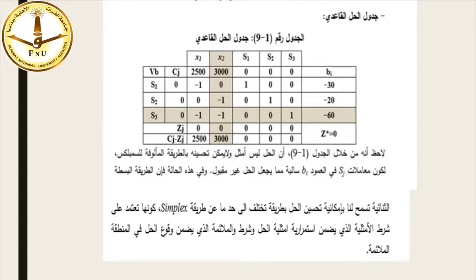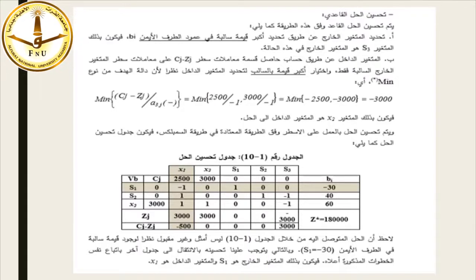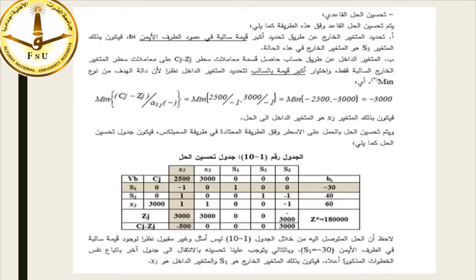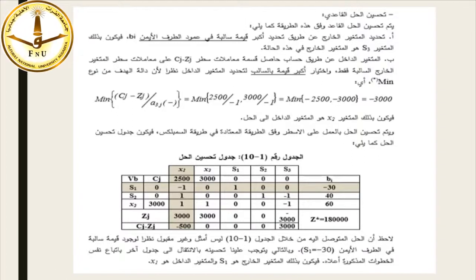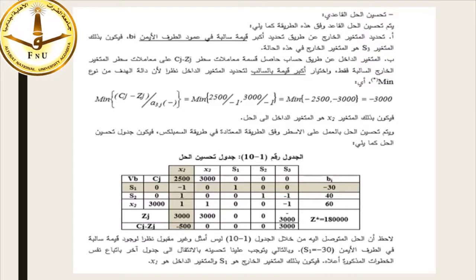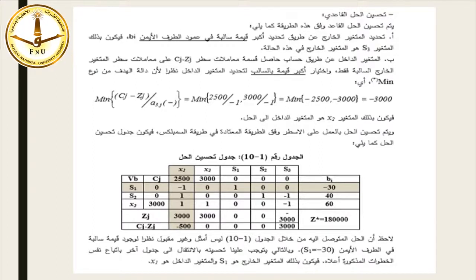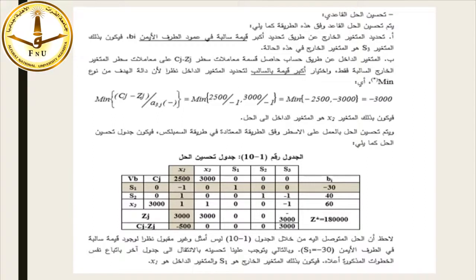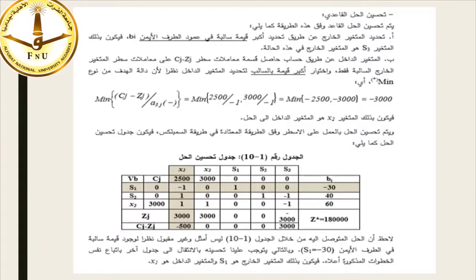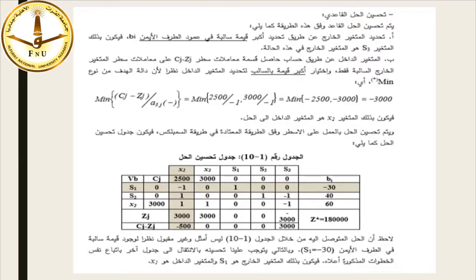تحسين الحل القاعدي وفقاً لهذه الطريقة يتم كما يلي: أولاً تحديد المتغير الخارجي عن طريق تحديد أكبر قيمة سالبة في عمود الطرف الأيمن Bi. وثانياً تحديد المتغير الداخل عن طريق حساب حاصل قسمة معاملات سطر Cj-Zj على معاملات سطر المتغير الخارج السالبة فقط، واختيار أكبر قيمة بالسالب. نظراً لأن دالة الهدف من النوع مان (تدني) تكون: 2500÷(-1)=-2500 و3000÷(-1)=-3000، فيكون المتغير الداخل هو X2 لأن -3000 هي أكبر قيمة سالبة.